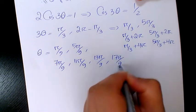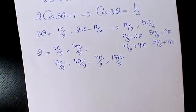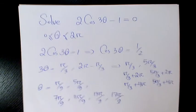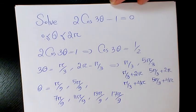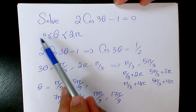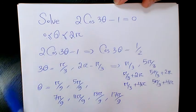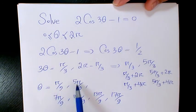So these are going to be the four answers to this question when theta is changing from 0 to 2π. So the answer is going to be π over 9, 5π over 9, 7π over 9, 11π over 9, 13π over 9, and 17π over 9.